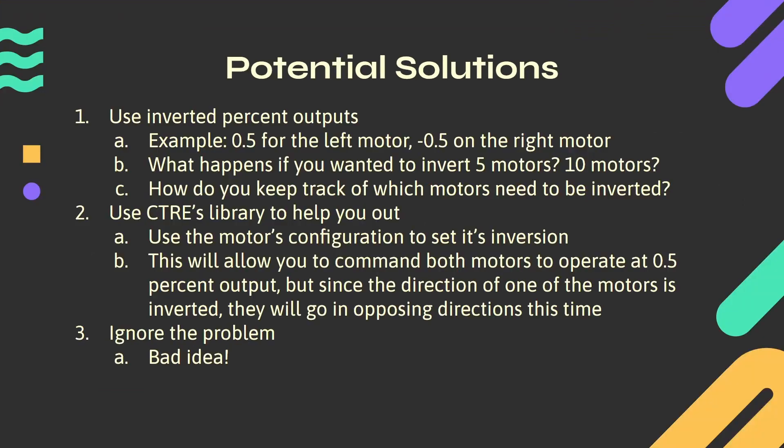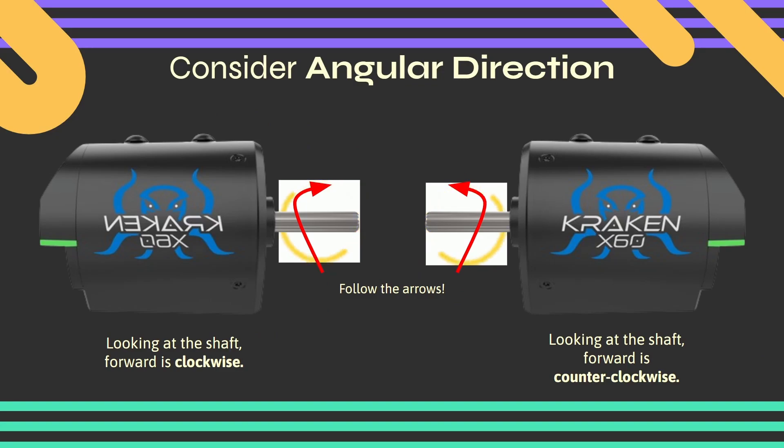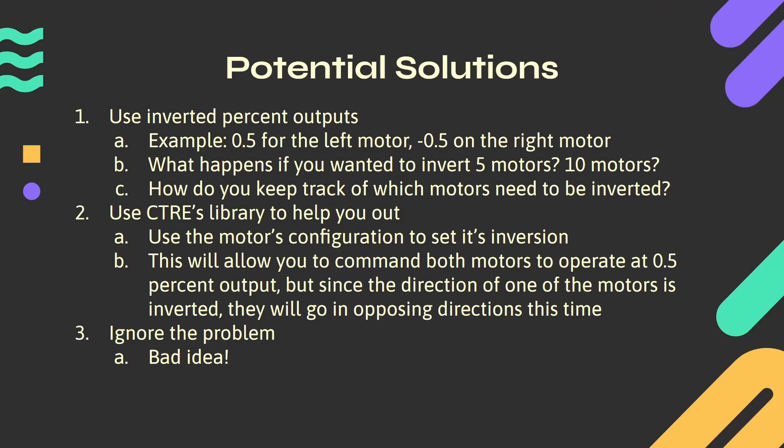So here are some potential solutions. We can use inverted percent output — for example, 0.5 for the left motor and negative 0.5 for the right motor. But what happens if you want to invert five or ten motors — how do you keep track of which ones need to be inverted? Option two is to use CTRE's library, using the motor configuration to set its inversion. This allows you to command both motors at 0.5 output without changing the sign — the inverted motor will go in its opposite direction. The third option is to ignore the problem, which is a bad idea — you could potentially destroy these motors.